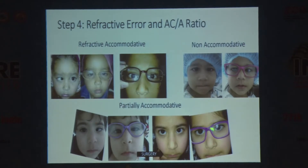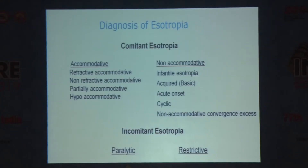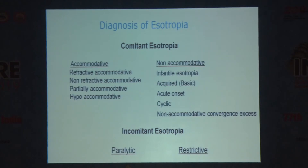In a partially accommodative case, even after surgery without glasses, there is still some esotropia — so you have to give glasses after surgery as well. The commonest esotropias we tend to see are infantile esotropias, which are non-accommodative. You give the full cycloplegic correction, but the deviation for distance and near would be the same — a basic form. You also need to look at incomitant ones, whether they're paralytic or restrictive.